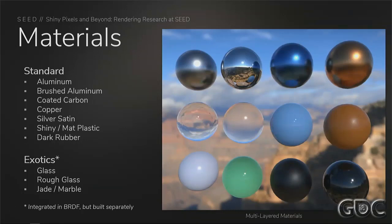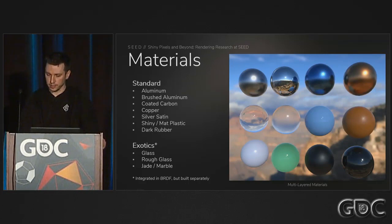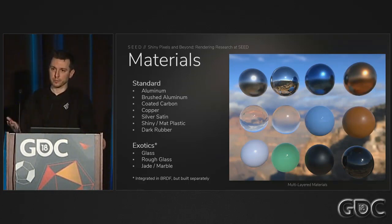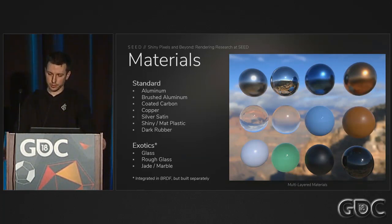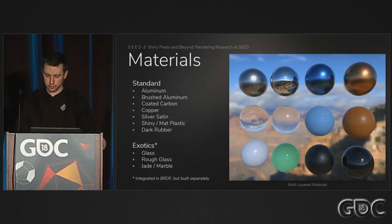Here are some of the materials you can find in the demo and the video. This approach has allowed our artists to represent a variety of isotropic materials where rough and smooth varies between the different layers. We also support glass and translucency, which I'll go over in a few slides. You probably noticed that we only show isotropic materials — in the future, we're looking at adding anisotropy as well.